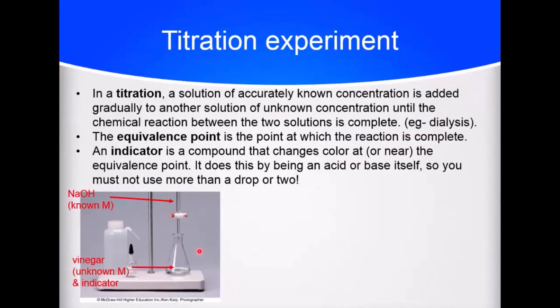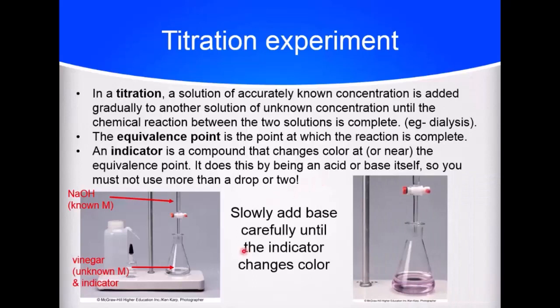So we're going to take our titration, which is of a known molarity base, and add it carefully to an unknown concentration of acid. We know what the acid is. It's acetic acid, because we're going to throw some vinegar in there. And we also have to make sure that we add our indicator. Just a drop or two, because indicators are acids or bases themselves. And so if you use more than a drop or two of indicator, you're going to change the pH of the solution. I know in the pH lab, we squirted in a whole bunch of Yamada's indicator. That Yamada's indicator was pretty dilute, so we got away with it.